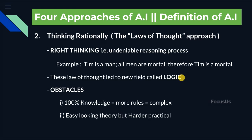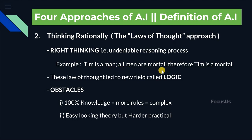Second, we have thinking rationally, which is also called the laws of thought approach. Thinking rationally basically means right thinking — an undeniable or irrefutable reasoning process. For example: Tim is a man; all men are mortal; therefore, we can say that Tim is also mortal.